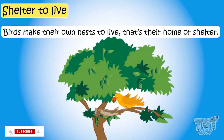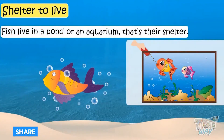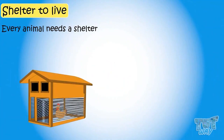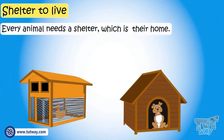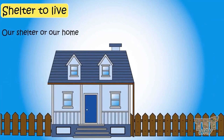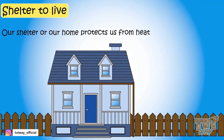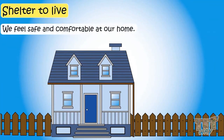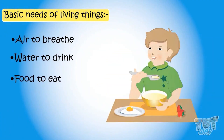Fish live in a pond or aquarium at our home — that's their shelter or home. So every living animal needs a shelter, which is their home. Our shelter or home protects us from heat, cold, wind, and rain. We feel safe and comfortable at our home. So kids, we learned the basic needs of living things: air, water, food, and shelter.